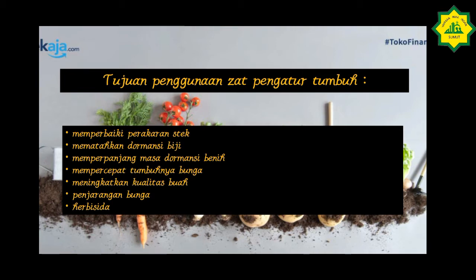Tujuan penggunaan zat pengatur tumbuh: yang pertama, memperbaiki perakaran stek; yang kedua, mematahkan dormansi biji; yang ketiga, memperpanjang masa dormansi benih; yang keempat, mempercepat tumbuhnya bunga; yang kelima, meningkatkan kualitas buah; yang keenam, penjarangan bunga; dan yang ketujuh, herbisida.